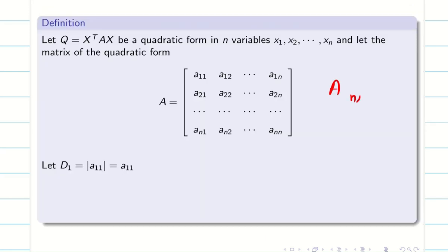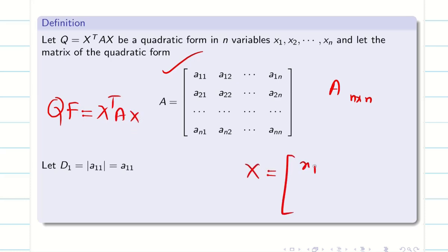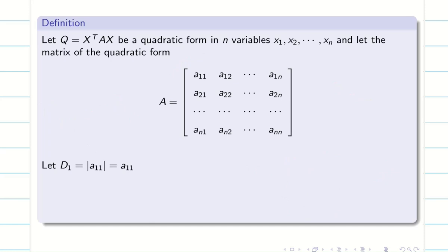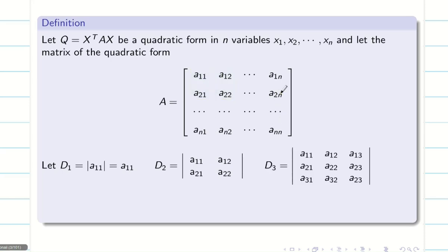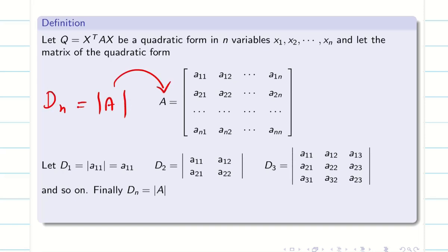If we take an n×n matrix A, the quadratic form Q is defined as X-transpose AX, where X consists of elements X1, X2, X3, ..., Xn. We define D1 as the determinant of the first element A11. D2 is the determinant of the first 2×2 submatrix, D3 is the determinant of the first 3×3 submatrix, and so on. Finally, Dn is the determinant of the whole matrix A.